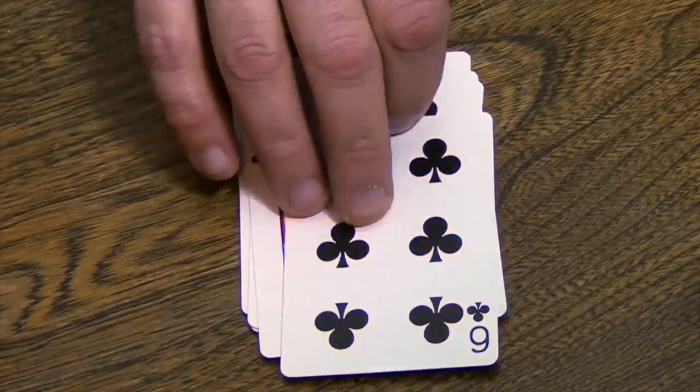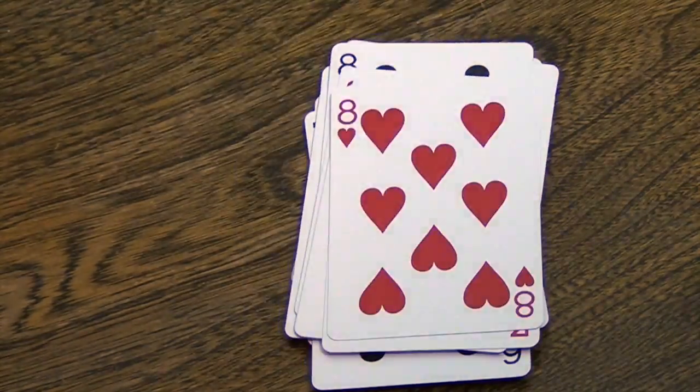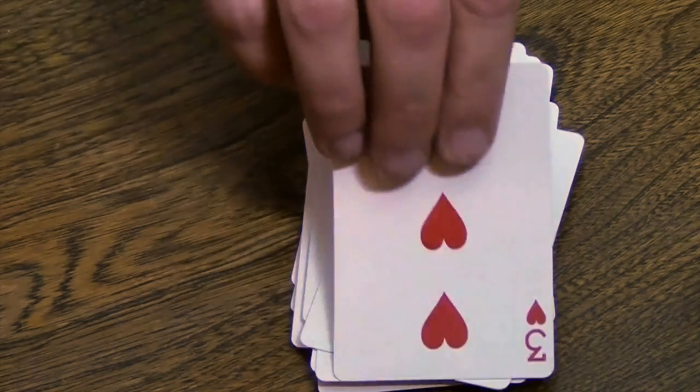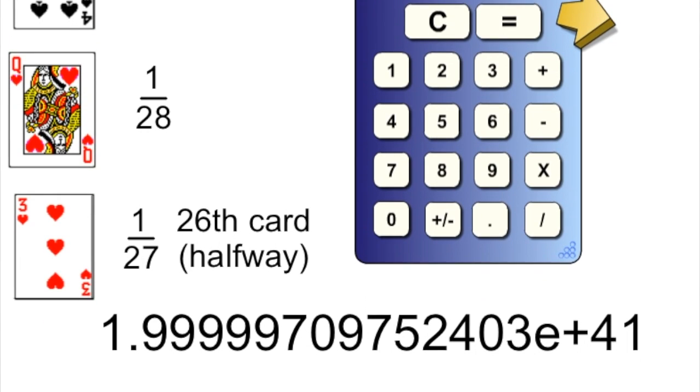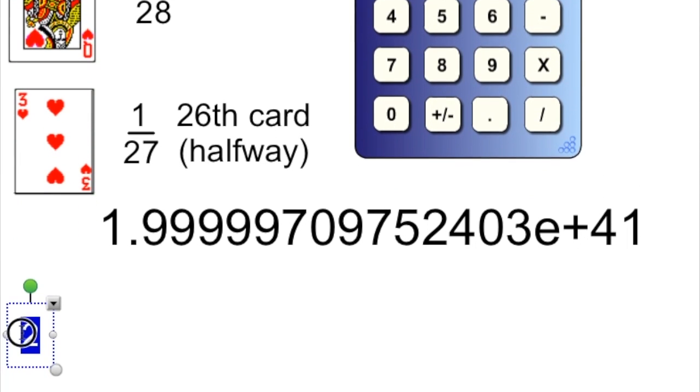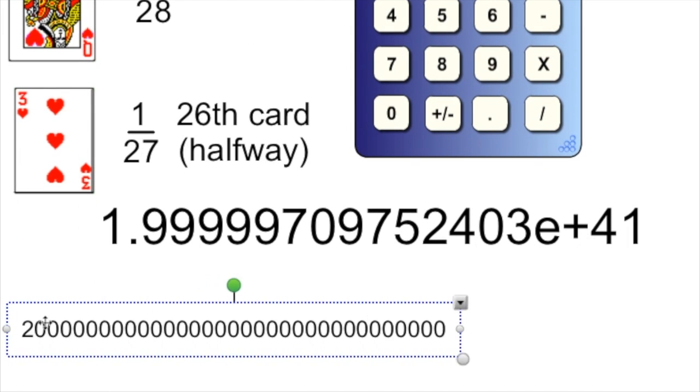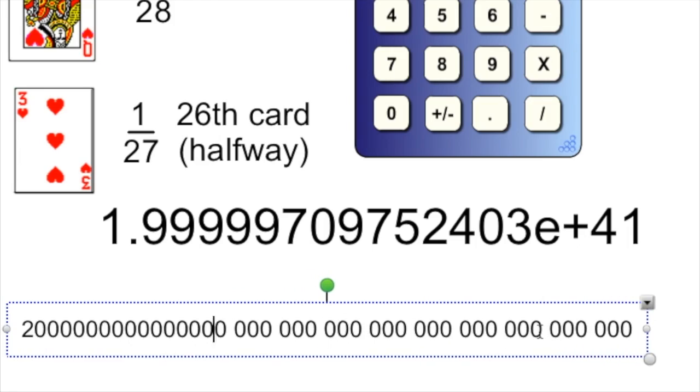We'll fast forward to the 26th card in the deck. That's halfway. You can see that the 26th card, the three of hearts, had one in 27 chances of being selected because the previous 25 cards have been flipped and they're no longer in the deck. So if we put all of the probabilities from the first 26 cards into the calculator, we get this behemoth. That's a 20 followed by 41 zeros.